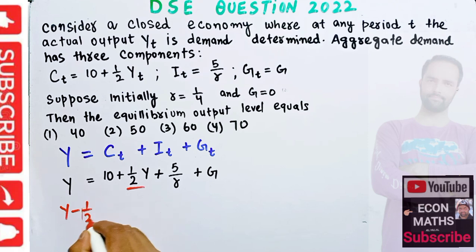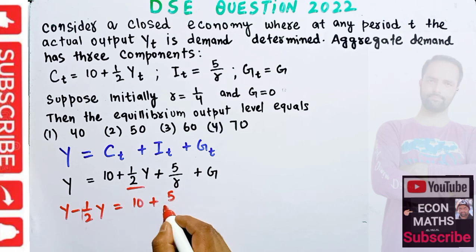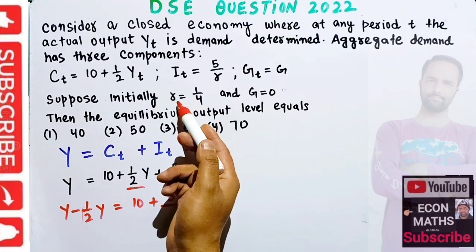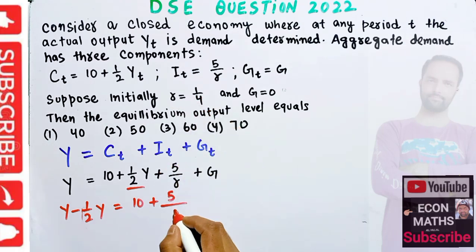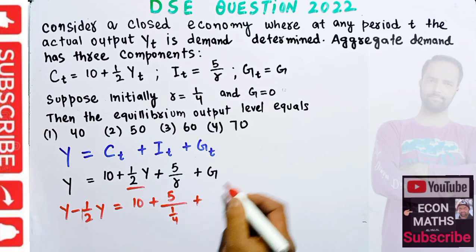This equals 10 plus 5/r. We are being told that initially rate of interest is 1/4, so we substitute 1/4 in place of r, plus government expenditure is 0.